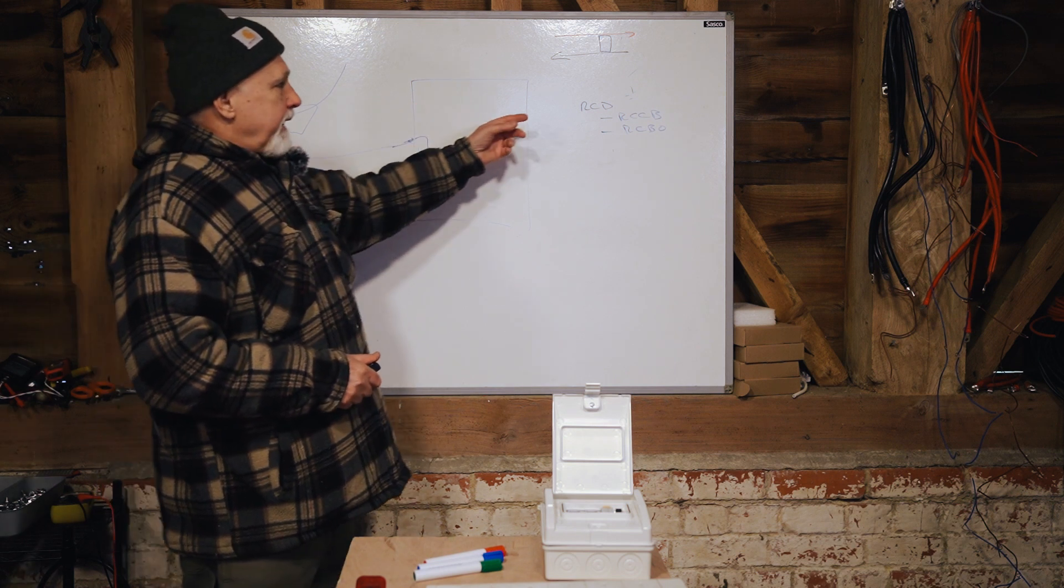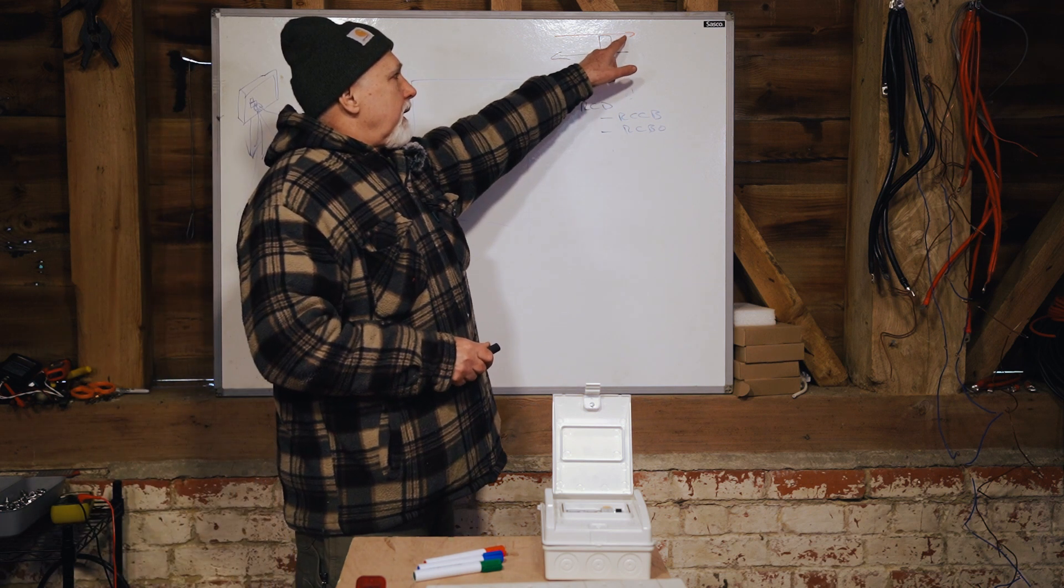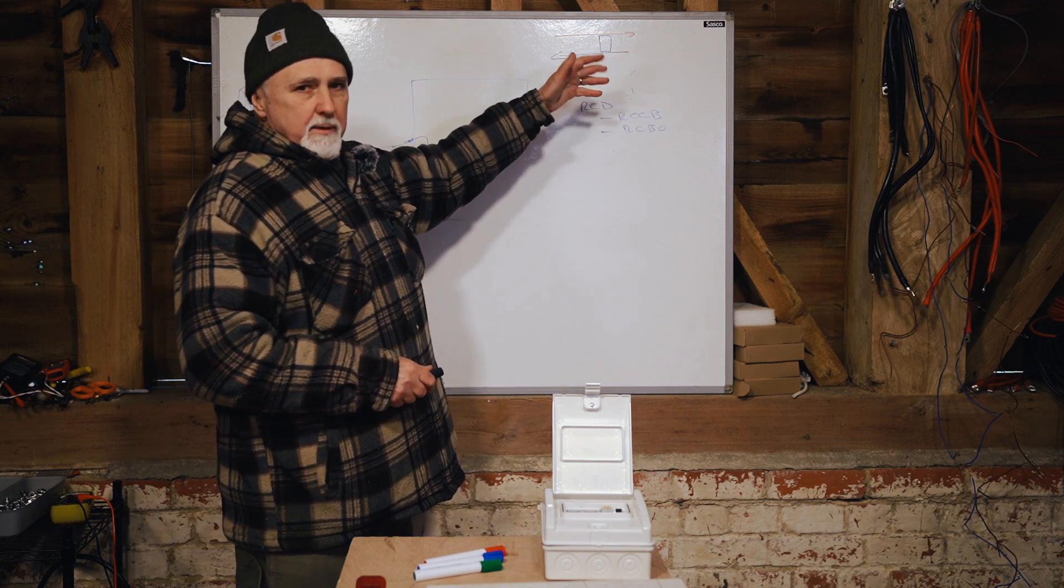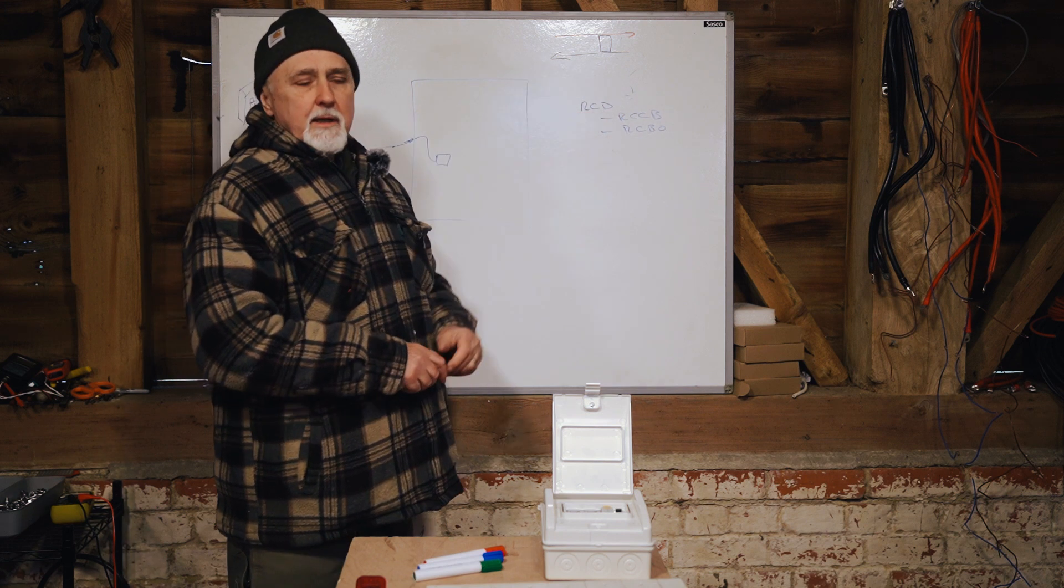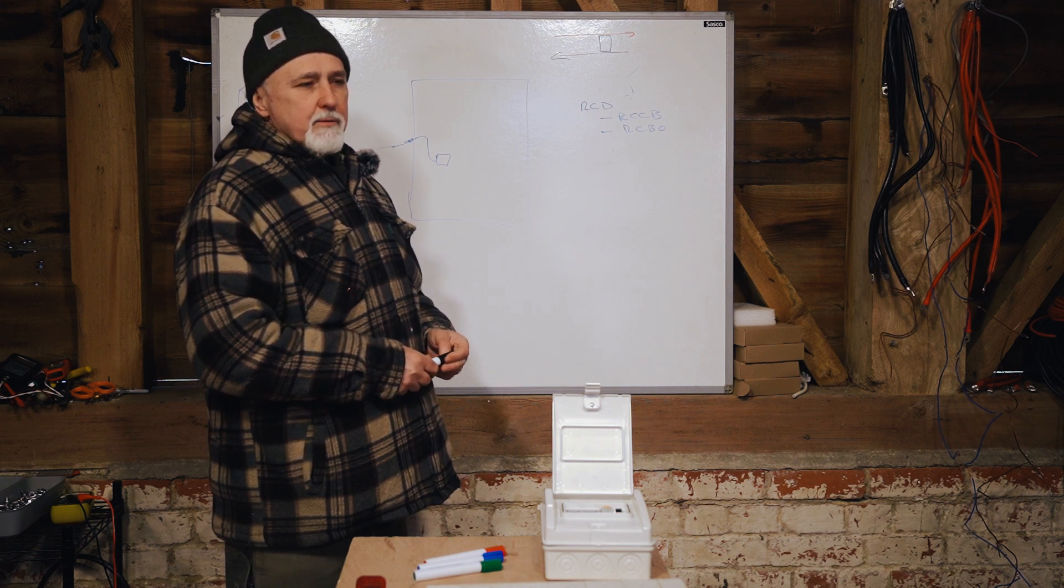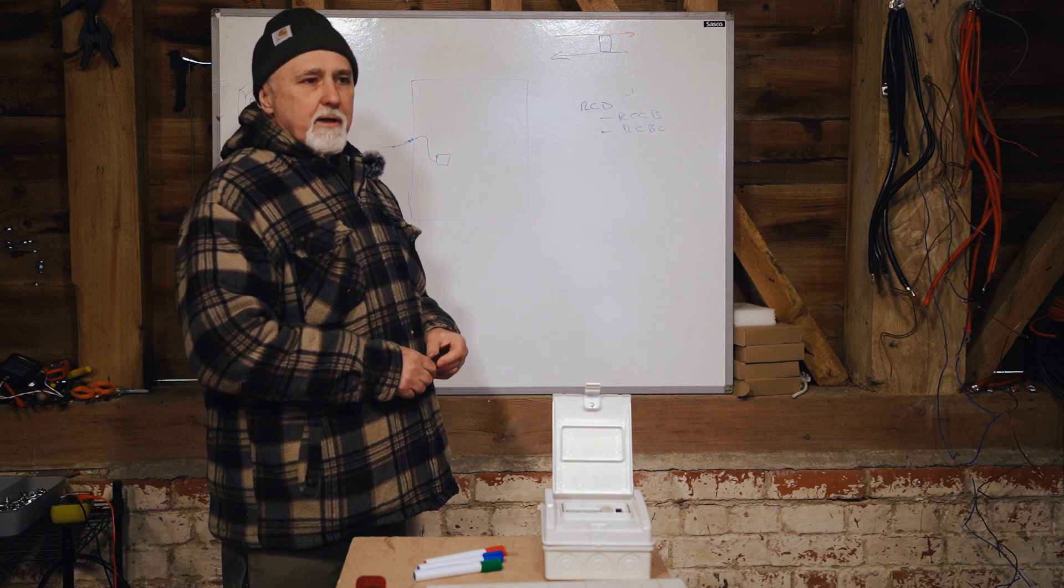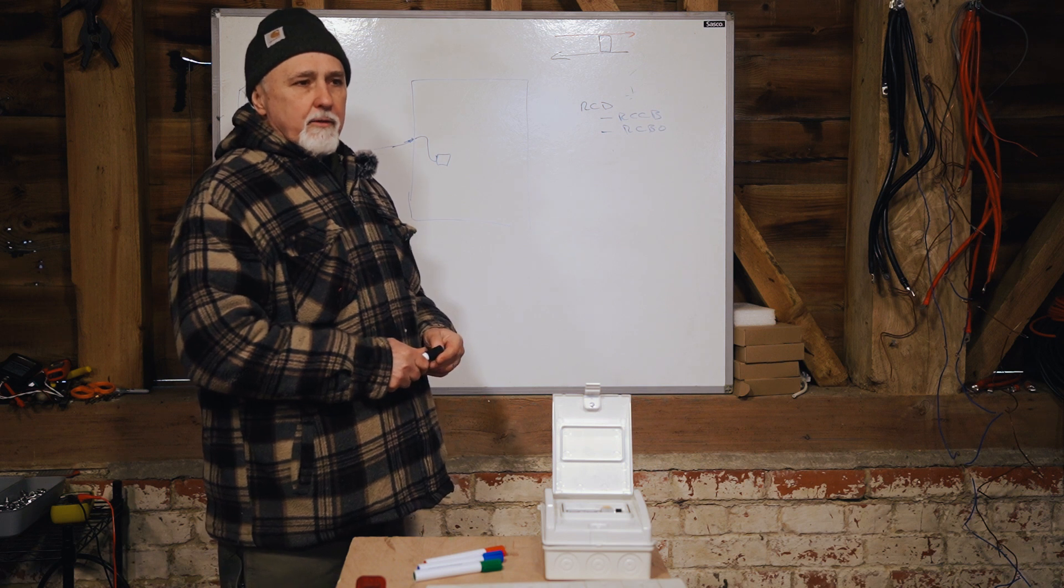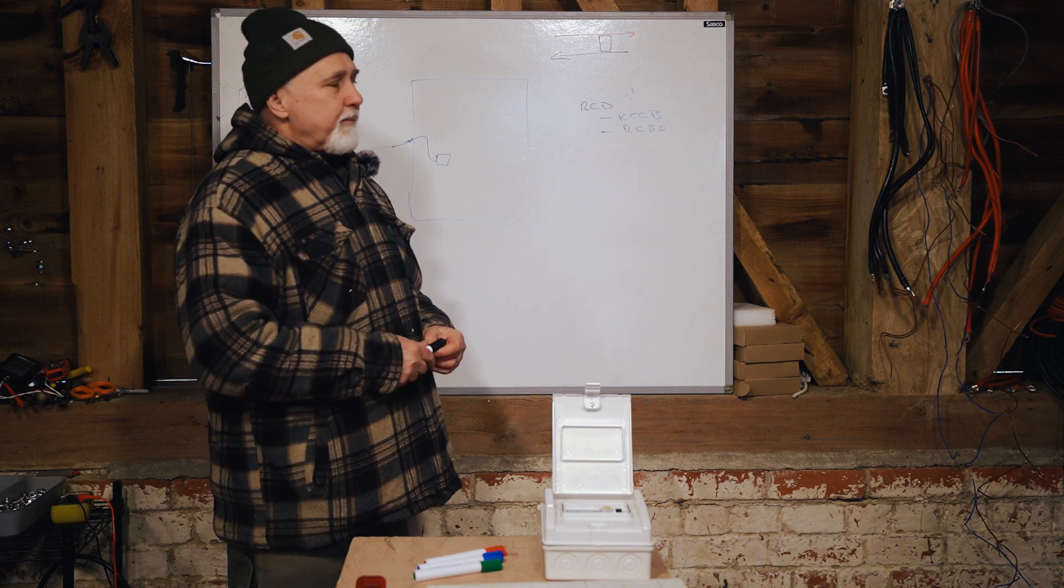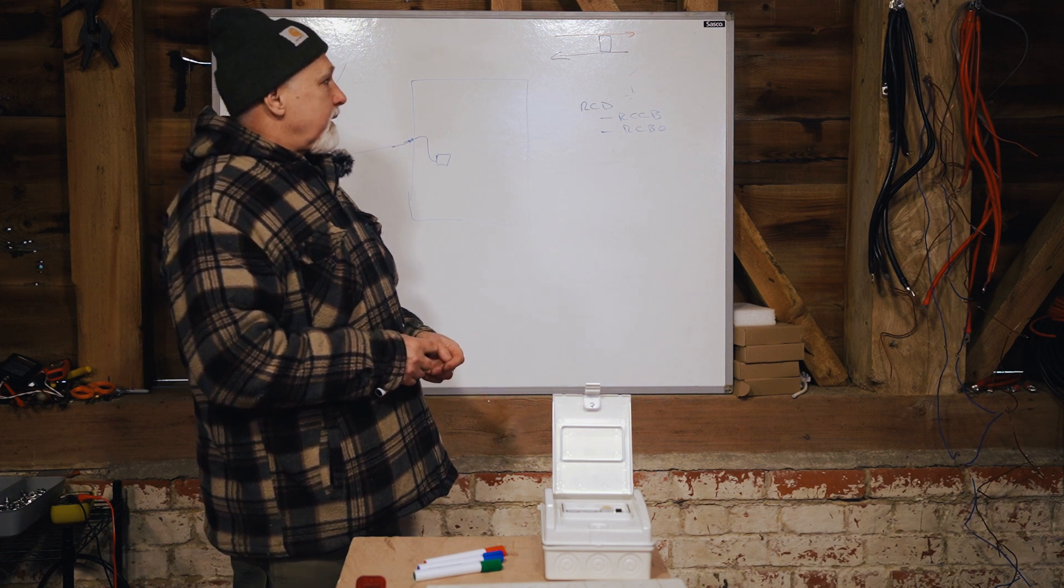The RCDs generally, there's a 30 milliamp trigger, so when it detects the difference between the live and neutral current of 30 milliamps, that's when it trips. There are other stipulations as well, but the important thing is 30 milliamps. And I can't remember exactly what it is, but there is a, I think it's around about 50 to 60 milliamps that it is thought that at that level it's enough to kill an average healthy adult human being. So 30 milliamps is well within that, and that is the normal RCD that you get in most places, is a 30 milliamp.